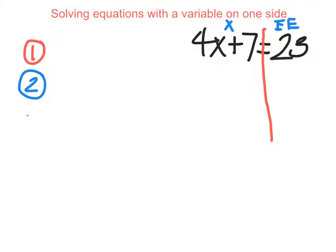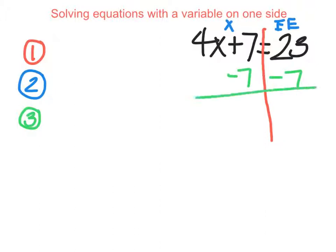For step 3, we're going to move the terms that don't have x with them. The thing that's out of place is this plus 7 right here, because it does not have an x with it. So this plus 7 really needs to be on the other side with everything else. To get rid of something that's plus, we're going to minus 7 from both sides. The reason we minus 7 is to get rid of the plus 7 — to get rid of it, we do the opposite of plus, which is to minus.